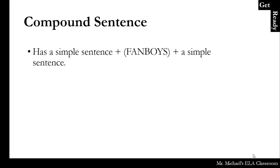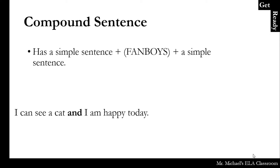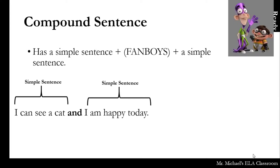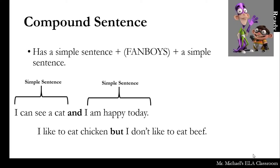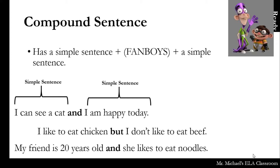A compound sentence is different. It has a simple sentence, plus a FANBOY, plus another simple sentence — like two simple sentences connected by a FANBOY. For example: "I can see a cat, and I am happy today." — "I can see a cat" is a simple sentence; "I am happy today" is a simple sentence; they are connected by a FANBOY. Another example: "I like to eat chicken, but I don't like to eat beef." And: "My friend is 20 years old, and she likes to eat noodles."